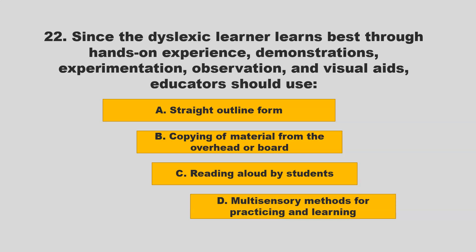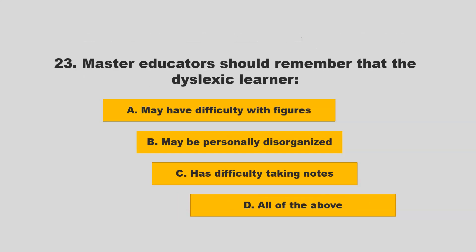Since the dyslexic learner learns best through hands-on experience, demonstrations, experimentation, observation, and visual aids, educators should use: A) straight outline form; B) copying of material from the overhead or board; C) reading aloud by students; D) multi-sensory methods for practicing and learning. If you chose D — multi-sensory methods for practicing and learning — you are correct.